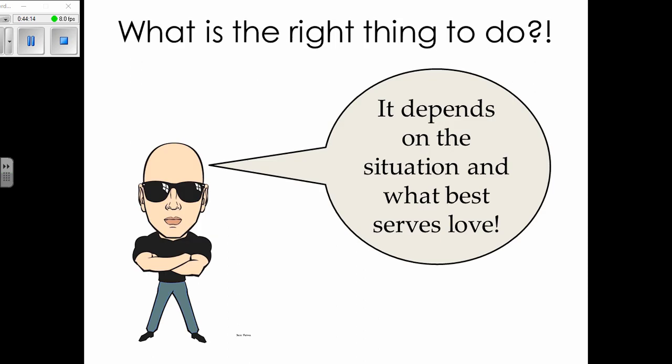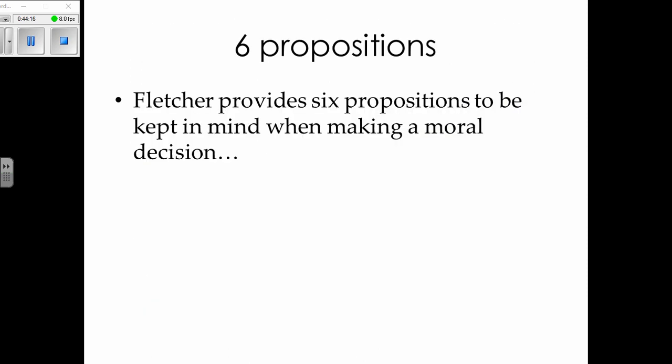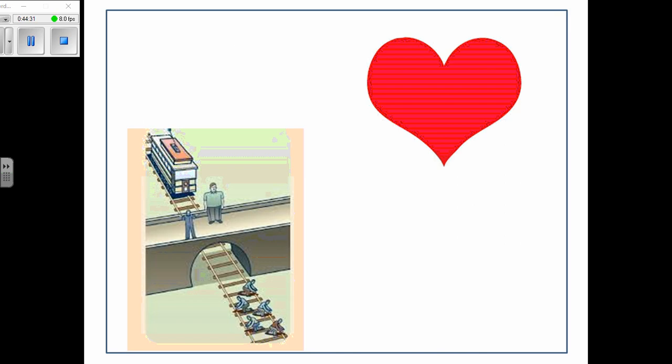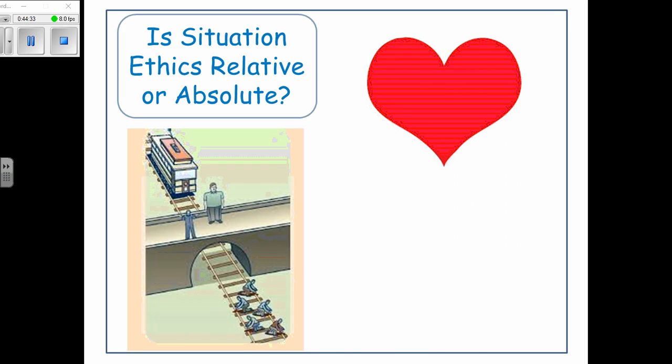So what form of ethics is this — depends on the situation and what best serves love? That is situation ethics. Now Fletcher comes up with six propositions — a list of six things you need to go through to work out the most loving thing relative to each situation. Before we look at those, consider: is situation ethics relative or absolute?